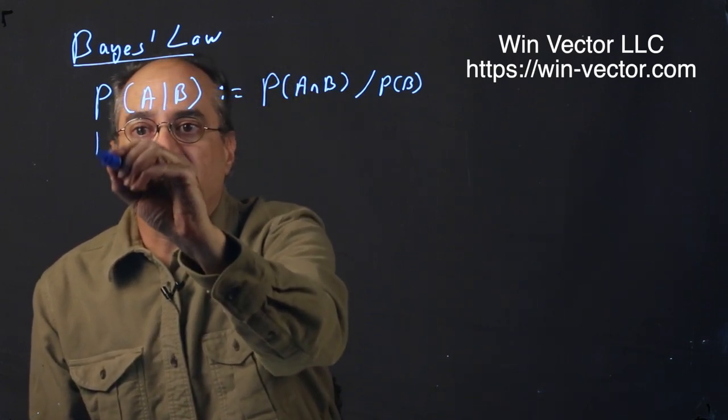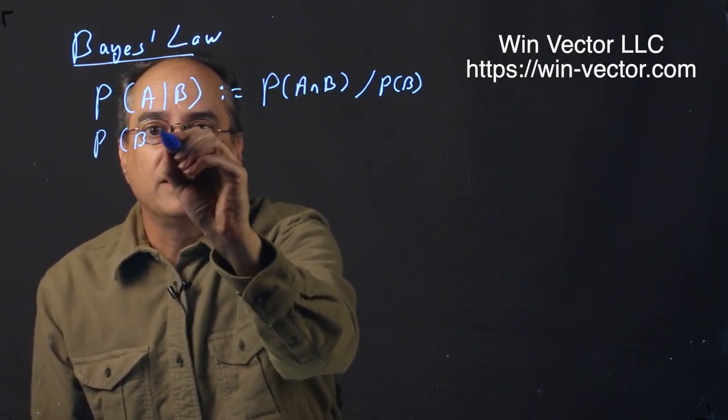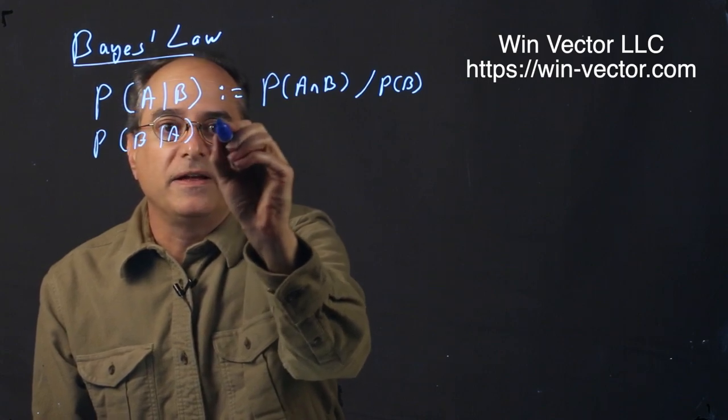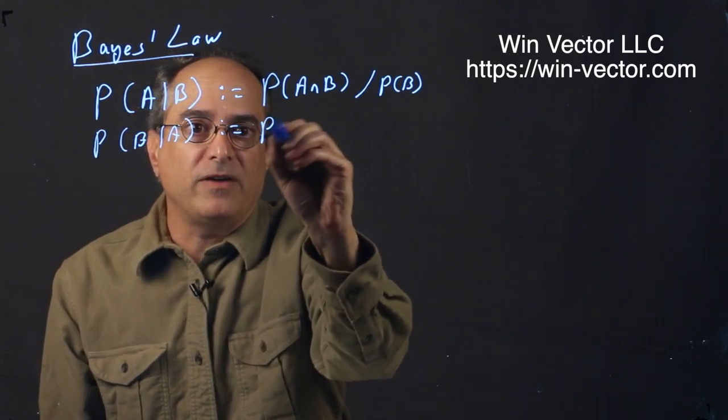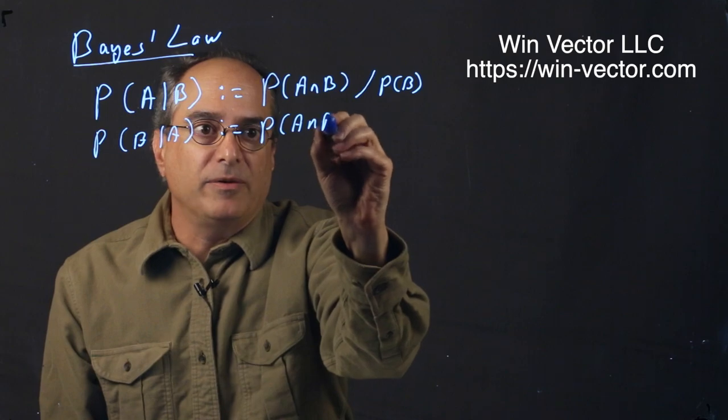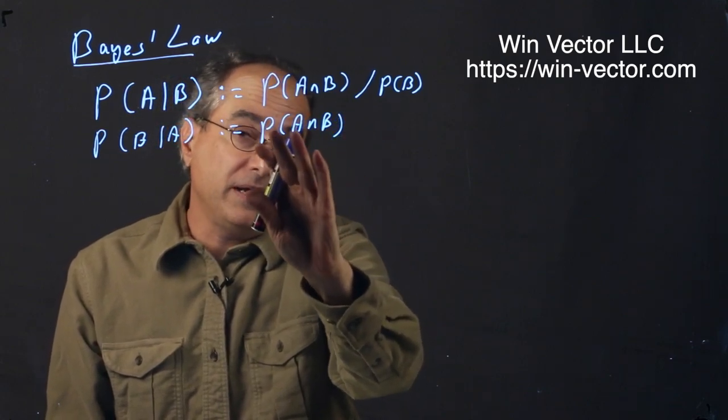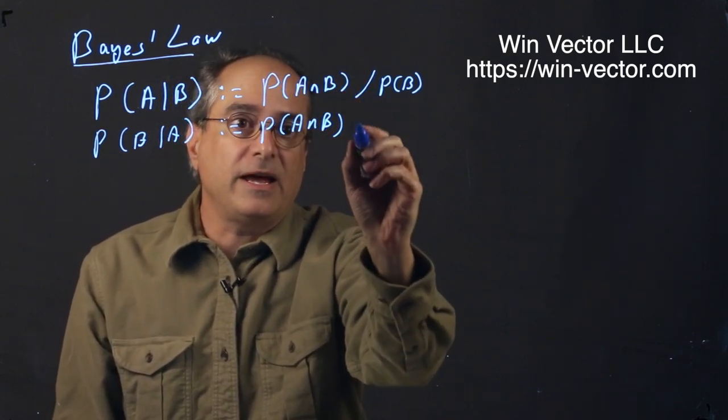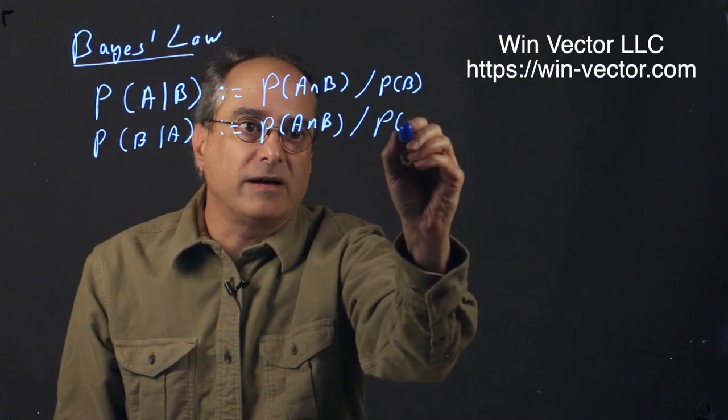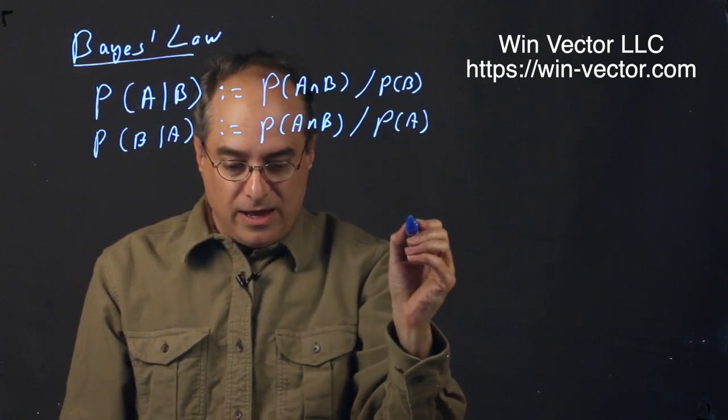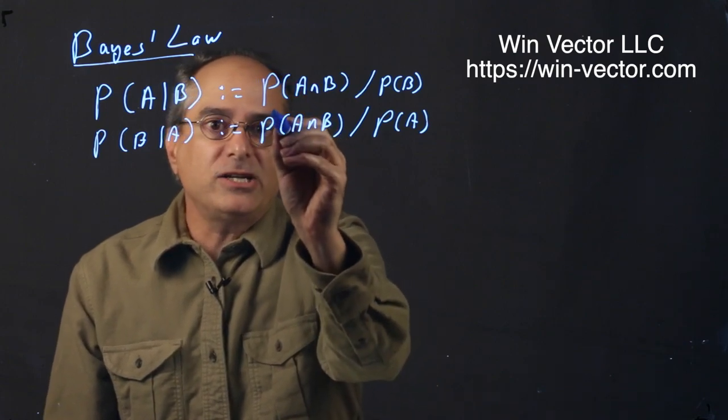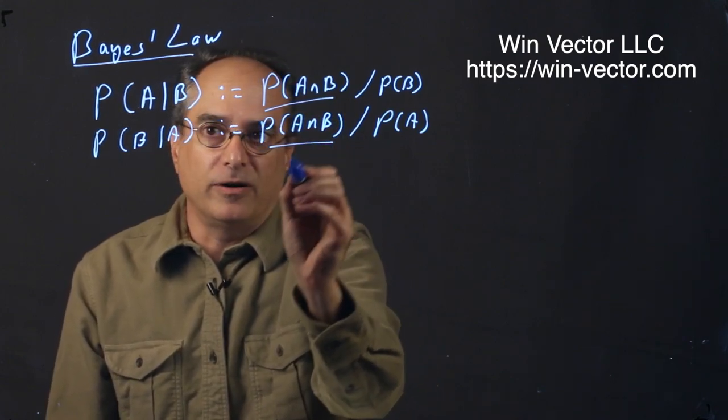By symmetry, the probability of B given A is also defined as the probability of A and B. I'm using the fact that P(A and B) equals P(B and A) just to write these the same, divided by P(A). So this time we're pretending A is the whole universe. We can derive Bayes' Law from this by matching these shared terms.